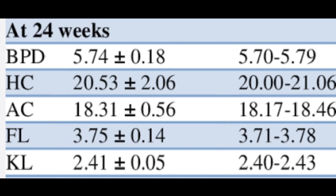Before starting the video, please see the fetal parameters at 23 to 24 weeks: BPD, HC, Abdominal Circumference, and Femur Length. In this live case, the parameters correspond to these values at 23 weeks of pregnancy.